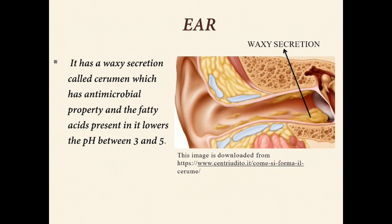Ear: the ear has a waxy secretion called cerumen which has antimicrobial properties, and the fatty acids present in it lower the pH between 3 and 5.